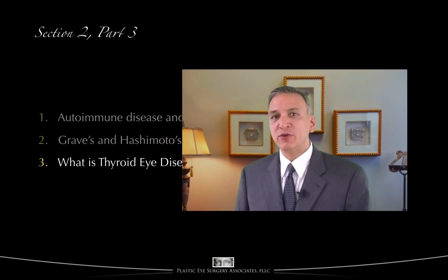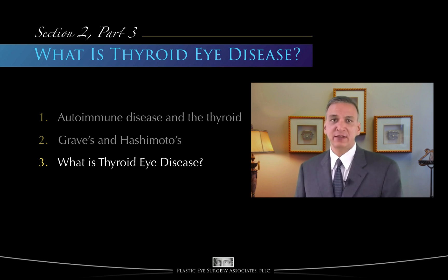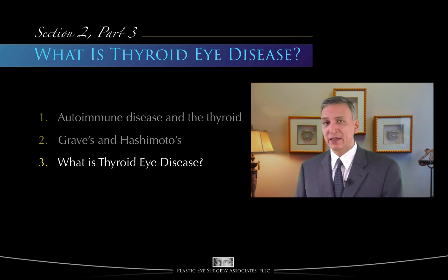In Section 1 of this series, we talked about the thyroid gland and the complex control over thyroid hormone production. In the first two videos in this section, we reviewed autoimmune disorders in general and talked a little about Graves' and Hashimoto's diseases. Now we'll move on and try to explain what exactly is thyroid eye disease.